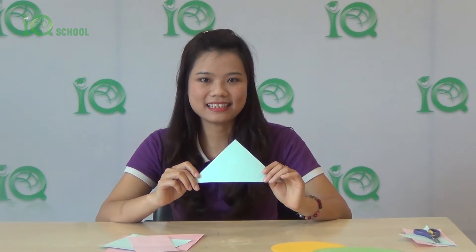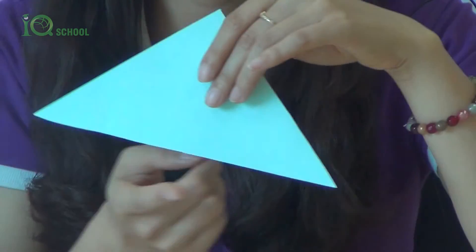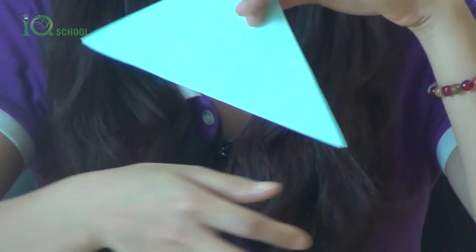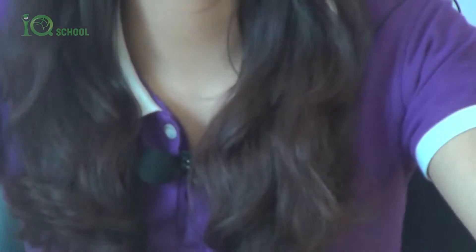What is this? Yes, it's a triangle. The triangle has three sides — one, two, three. Three sides! What about this one? Yes, it's a rectangle. So how many sides does the rectangle have? One, two, three, four.